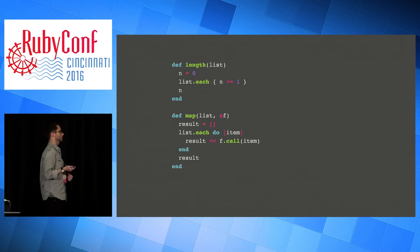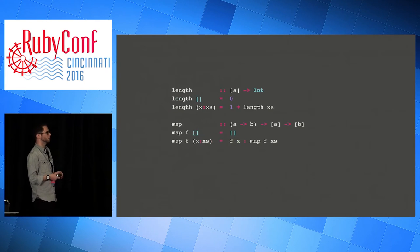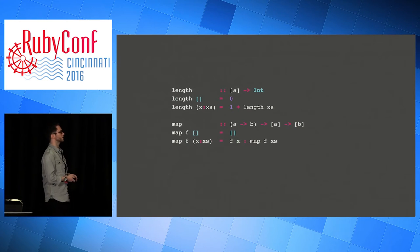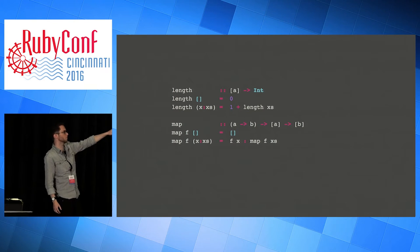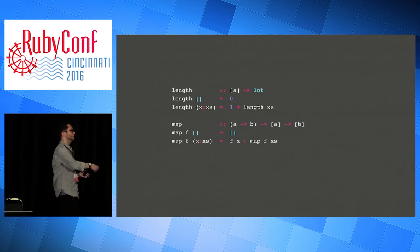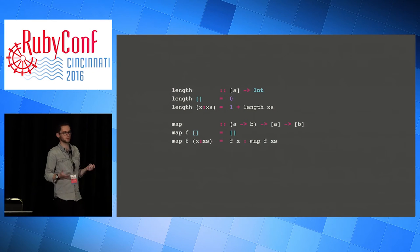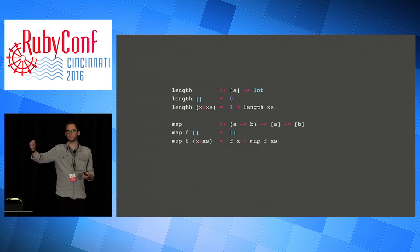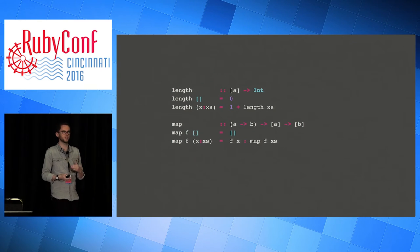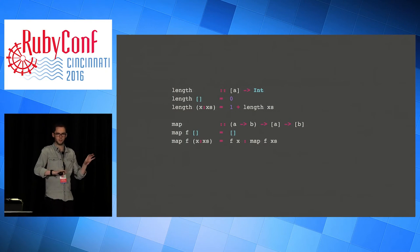The way you define these in a functional language is that you just make statements that things are equal to each other. For example: the length of the empty list is zero. The length of any other list - destructuring it into its first element and the rest - is one plus the length of the rest. Mapping over an empty list gives you an empty list. Mapping a function over any other list means you apply the function to the first element and then pair that with the map over the rest of the list. In Haskell, functions aren't procedures - they're not sequences of steps executed one by one. They're just statements that this is equal to that. You can rewrite this as this thing.